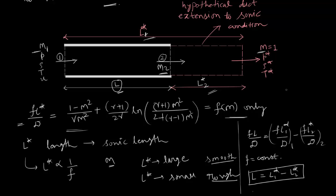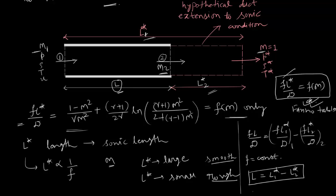Fanno tables have been defined where fL*/d as a function of M is tabulated. The friction factor f is generally determined from the Moody chart or the Colebrook equation.